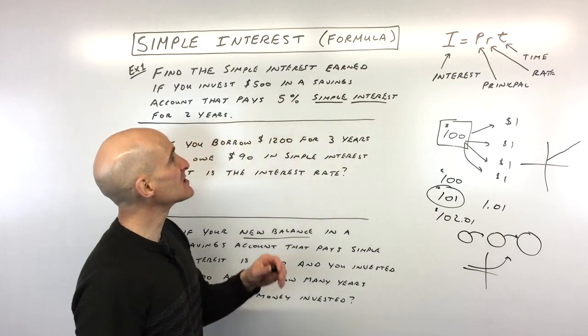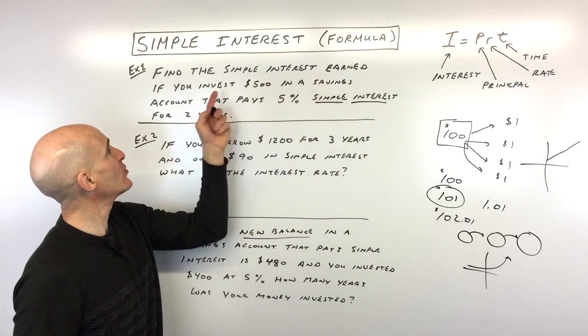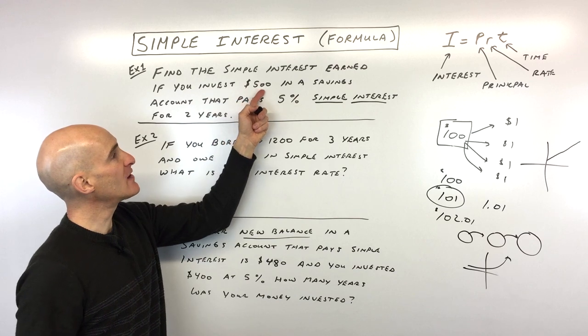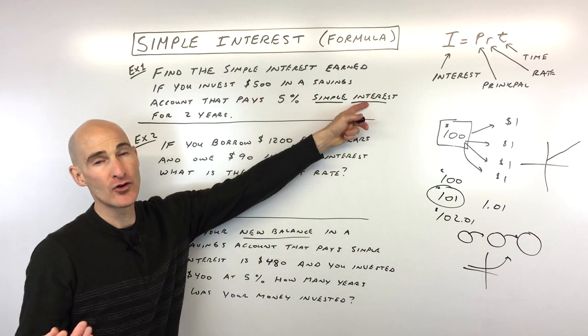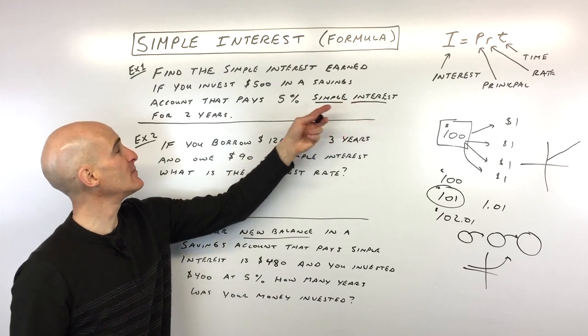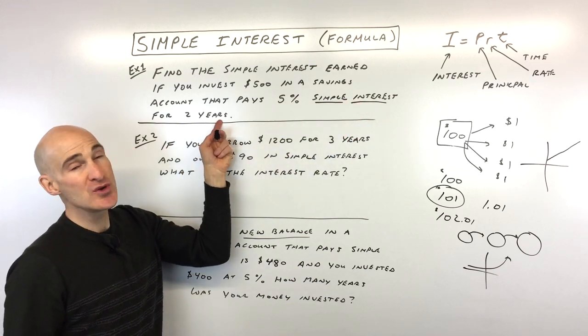Let's jump into this first example. It says find the simple interest earned if you invest $500 in a savings account that pays 5% simple interest. Normally savings accounts pay compound interest, but let's just say simple interest for two years.